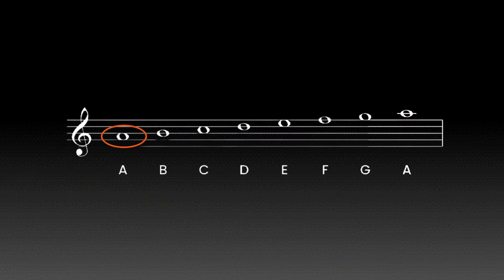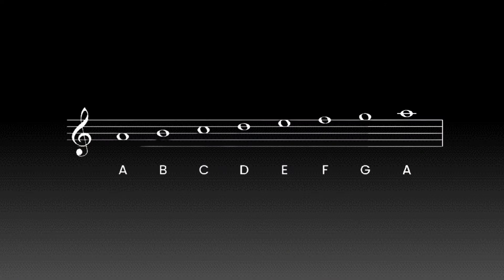In the minor scale we will take the first, flat third and the fifth notes. As an example, on the A minor scale we have the A note as a root, C as a flat third — and we can call it a small third because the distance between the third and the root note on the minor scale is only one and a half tone — and the fifth note, which is the E note.